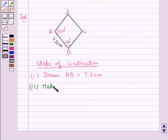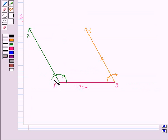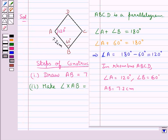Now in the next step, we make angle XAB equal to 120 degrees and angle YBA equal to 60 degrees. So this angle XAB is of measure 120 degrees and angle YBA is of measure 60 degrees.